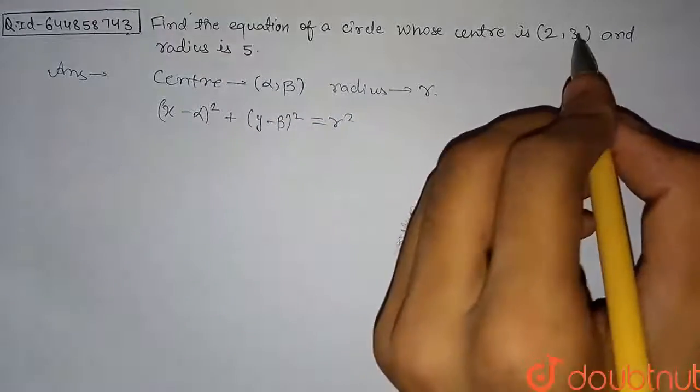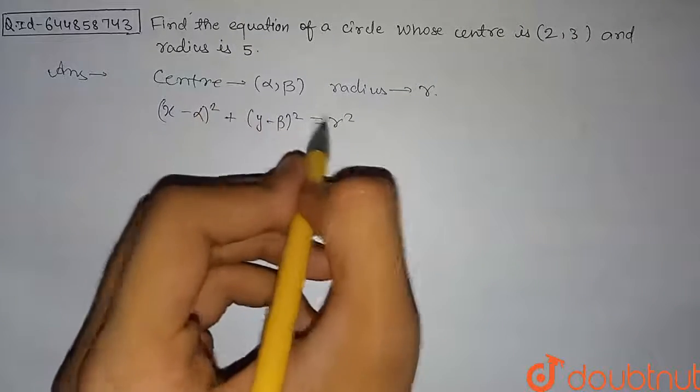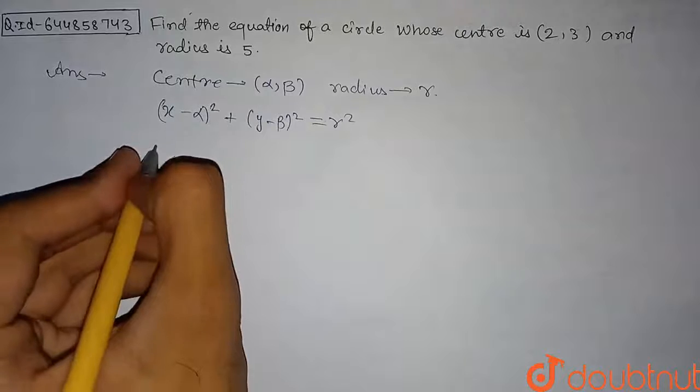So what we have to do is just substitute the value of (α,β) as (2,3) and radius r which is equal to 5. So from here we get (x - 2)²...